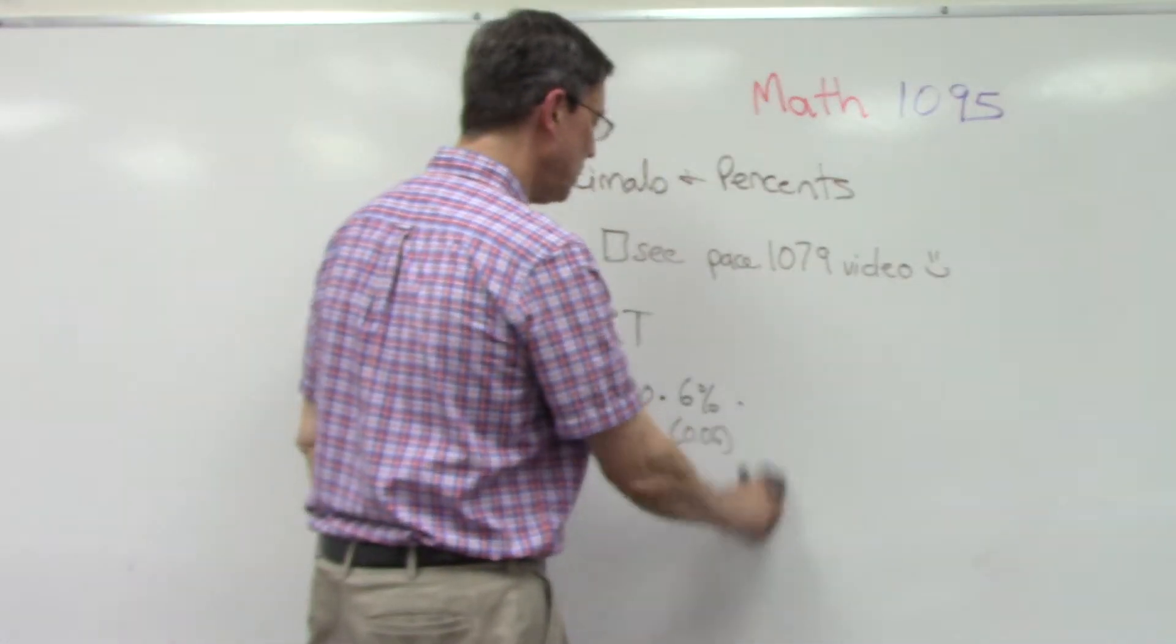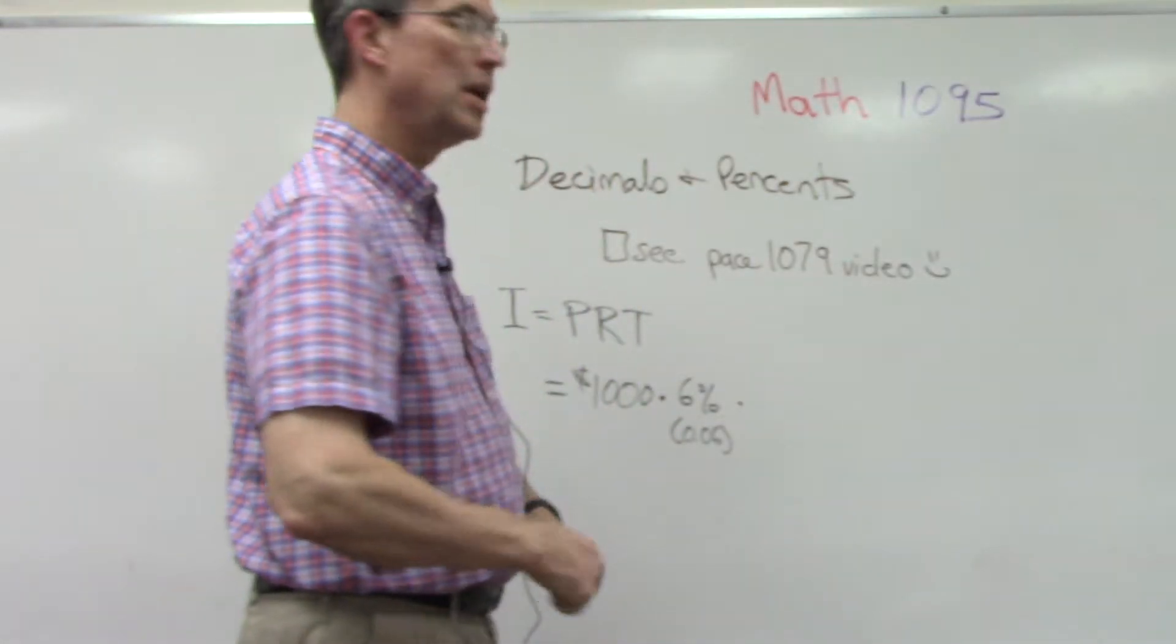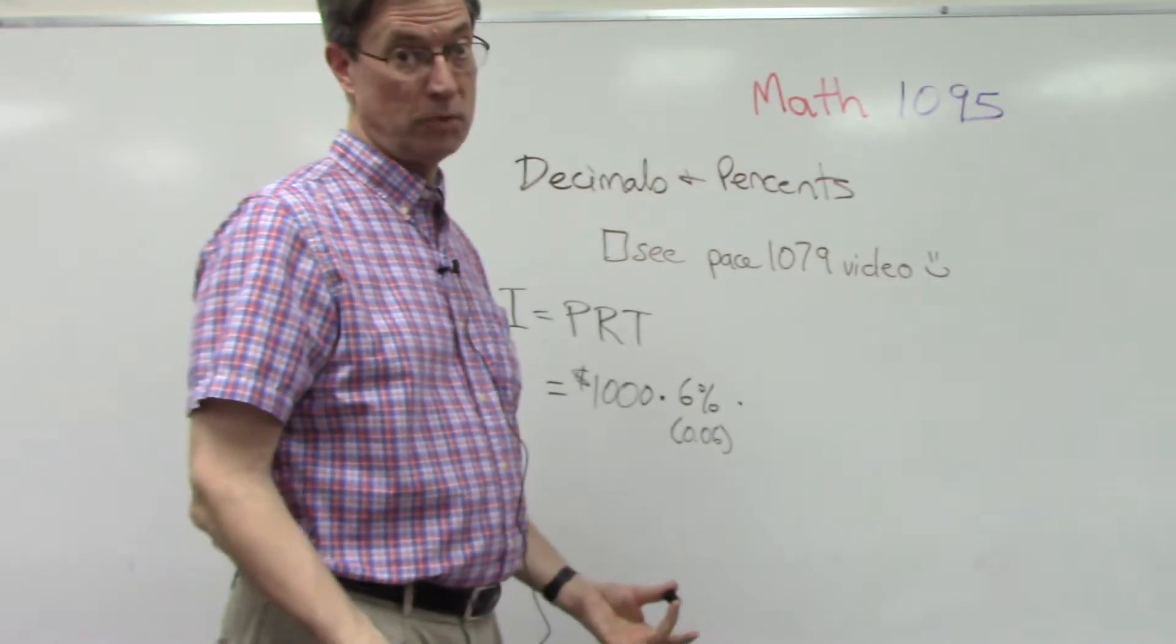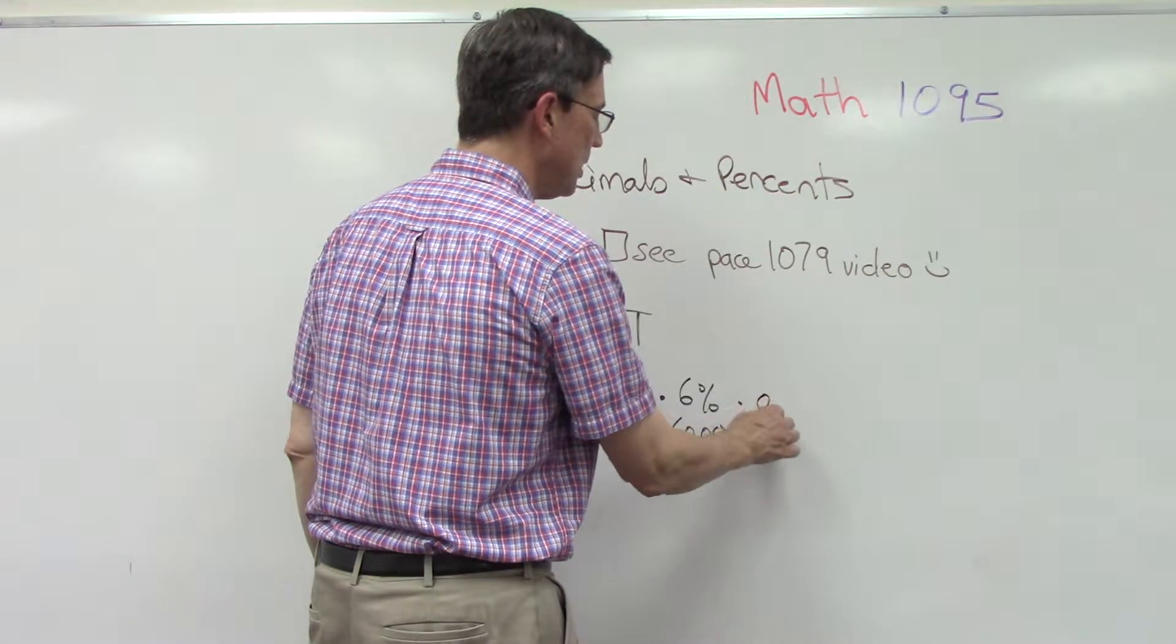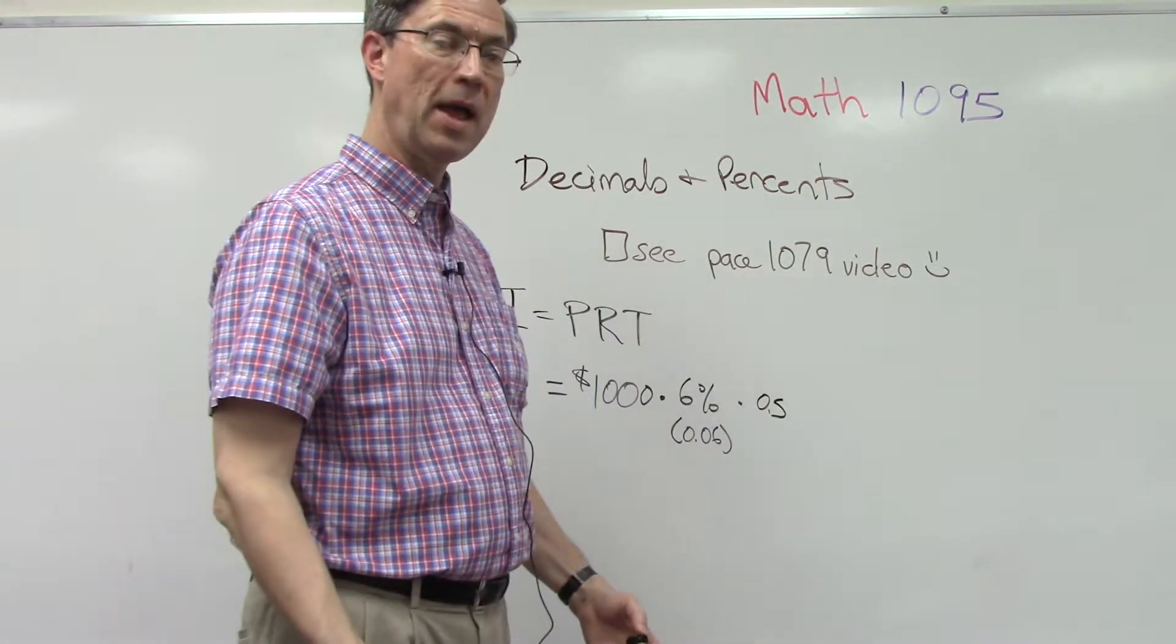Let me point out one other thing. On some problems, instead of a whole year, they might say six months. Well, that would be half a year, so then we would multiply times 0.5, or one-half.